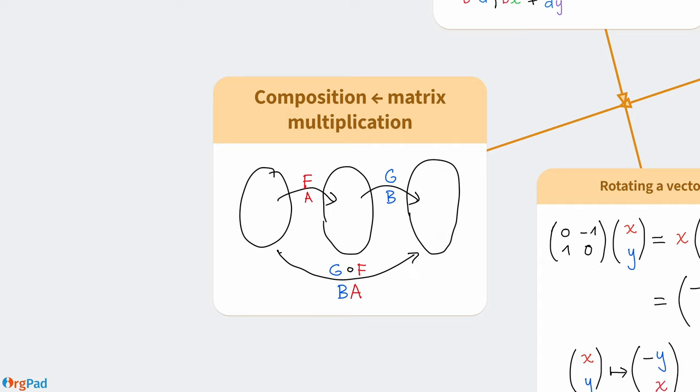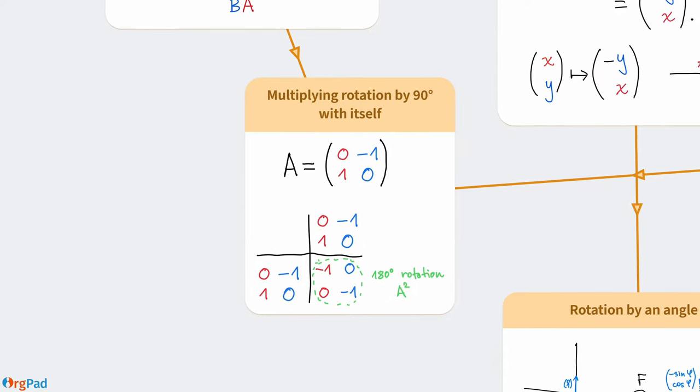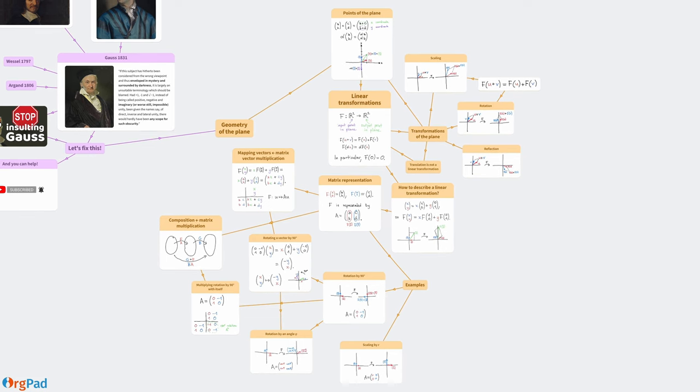Linear transformations can be chained. We first map the plane by a linear transformation F and then map the images by another linear transformation G. The resulting composite transformation is again linear. It turns out that it is represented by the matrix multiplication B times A. For example, when we apply the 90 degree rotation twice, it becomes the 180 degree rotation. We already know the matrix A of the 90 degree rotation. The matrix of the 180 degree rotation is obtained by multiplying A with A, which is A squared. Since the 180 degree rotation flips each vector, it is correctly represented by the matrix A squared. In summary, we have seen that points of the plane are represented by two coordinate vectors, while their transformations are described with 2x2 matrices. Whenever you see a matrix, geometrically it corresponds to some linear transformation.